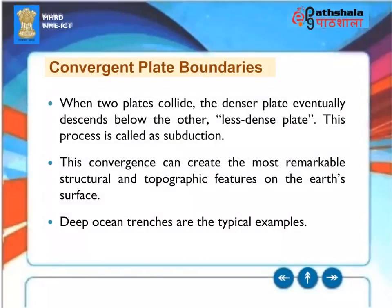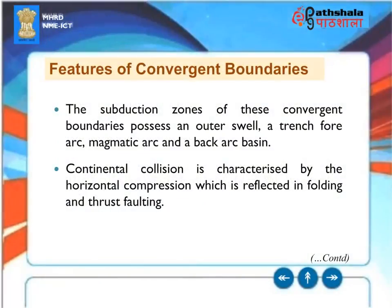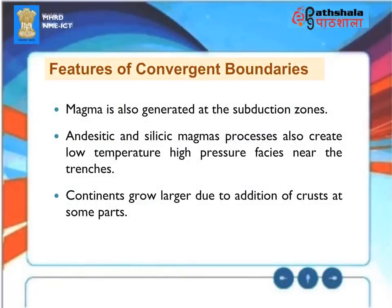When two plates collide, the denser plate eventually descends below the less dense plate — this process is called subduction. This convergence can create the most remarkable structural and topographic features on Earth's surface; deep ocean trenches are typical examples. The subduction zones of convergent boundaries possess an outer swell, a trench fore arc, magmatic arc, and a back arc basin. Continental collision is characterized by horizontal compression, reflected in folding and thrust faulting. Magma is also generated at subduction zones, including andesitic and silicic magmas, which create low temperature, high pressure phases near the trenches. Continents grow larger due to addition of crust at some parts.